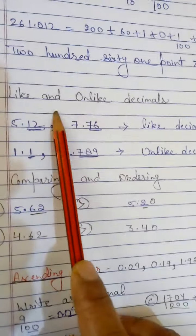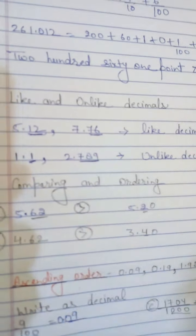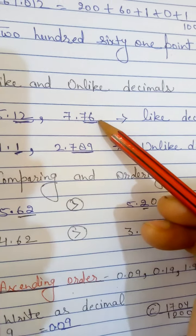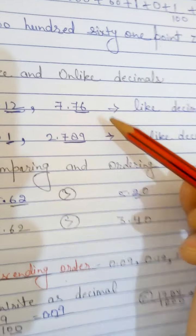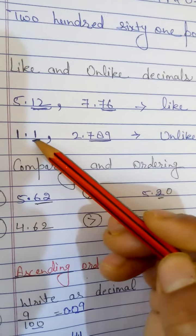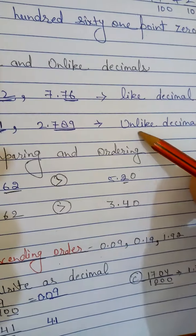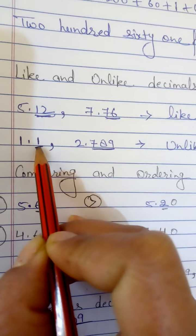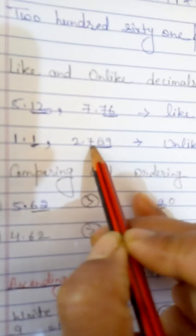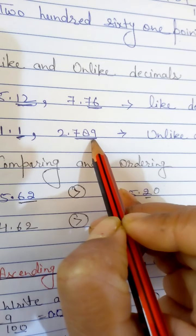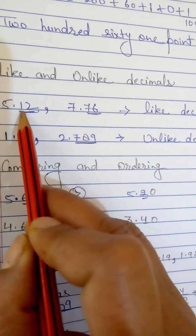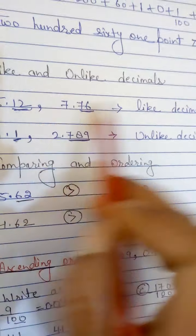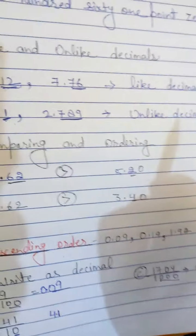Now, like and unlike decimals. For example, 5.12 and 7.76 — there are two digits after the decimal in both numbers. Since both have two digits after the decimal point, these are called like decimals. If one number has only one digit after the decimal and another has three digits after the decimal, they are called unlike decimals. If both have two digits — like 72 and 78 after the decimal — that is a like decimal. If one has three digits and another has only two, that is an unlike decimal.